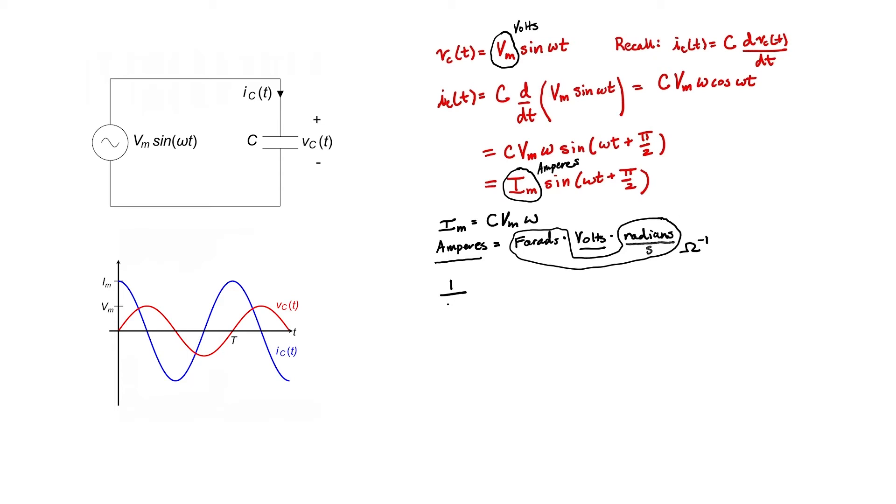This quantity 1 over C omega has units of ohms and it's called the reactance of the capacitor. As the frequency gets higher and higher, the reactance of the capacitor gets lower and lower. The opposite was true in an inductor. The frequency was in the numerator of an inductor. As the frequency gets higher and higher, the reactance of an inductor gets larger and larger.